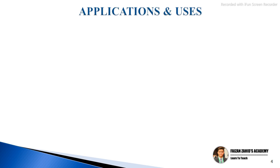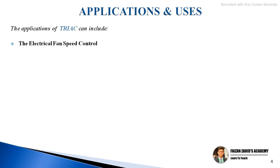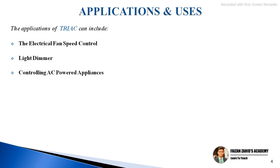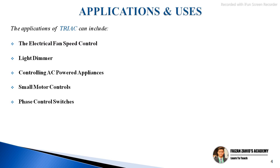The applications of TRIAC include electric fan speed control, light dimmer, controlling AC-powered appliances, small motor controls, phase control switches, power switches, and temperature control. There can be other applications and uses of TRIAC as well.